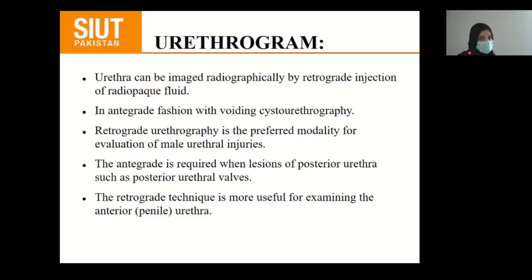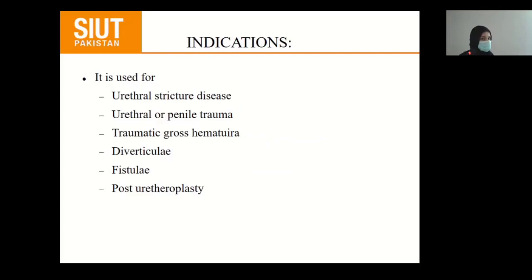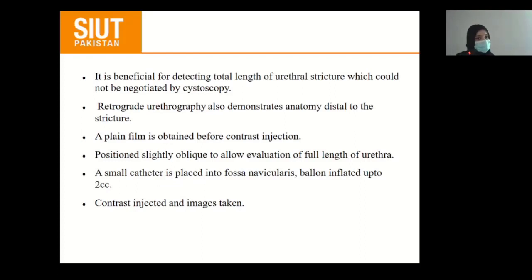Urethrogram: the urethra can be imaged radiographically by retrograde injection of radiopaque fluid or in an antegrade fashion with voiding cystourethrography. Retrograde urethrography is the preferred modality for evaluation of male urethral injuries. The antegrade approach is required when the lesion is in the posterior urethra, such as posterior urethral valves. Retrograde technique is more useful for examining the anterior penile urethra and is less reliable for the posterior urethra. Indications include urethral stricture disease, penile or pelvic trauma, extrinsic growth, diverticulum, fistula, and post-urethroplasty to document urethral integrity. It is beneficial for detecting the total length of the urethral stricture that cannot be negotiated by cystoscopy and demonstrates the anatomy distal to the stricture.